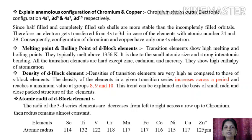Now let us discuss the density of d-block elements. Densities of transition elements are very high compared to those of s-block elements. The density of elements in a given transition series increases across a period and reaches maximum value at groups 8, 9, and 10. This trend can be explained on the basis of small radii and close-packed structure of the elements.